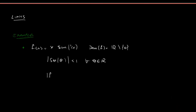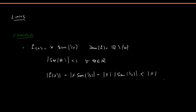So then we know the absolute value of f(x) is the absolute value of x·sin(1/x). Using the property that the absolute value of a product is the product of the absolute values, we have |x|·|sin(1/x)|. But 1/x is just another real number, so |sin(1/x)| ≤ 1, and therefore |f(x)| ≤ |x|.